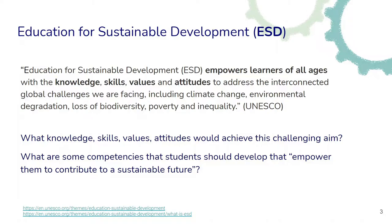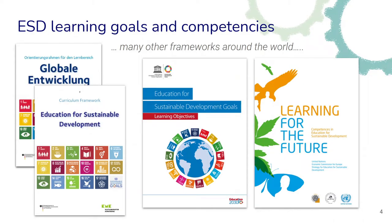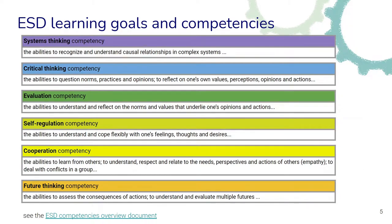We had a short discussion to explore some of our ideas about what kinds of knowledge, skills, values and attitudes this might entail. In general, there is quite a range of different competency or learning goal frameworks around the world that exist to answer this question. In this module, we will especially be looking at competencies such as systems thinking, cooperation competency, and future thinking competency, among others, which you can also explore in the ESD competencies overview document.